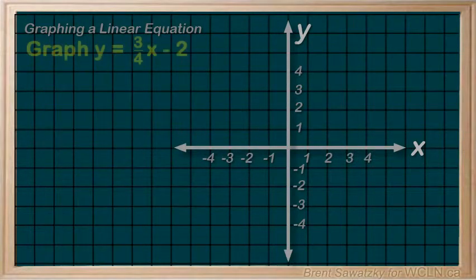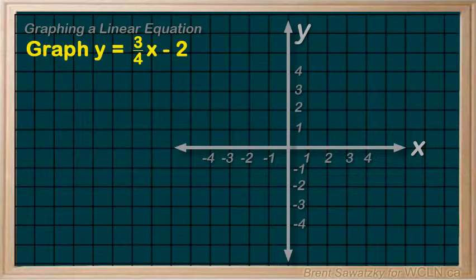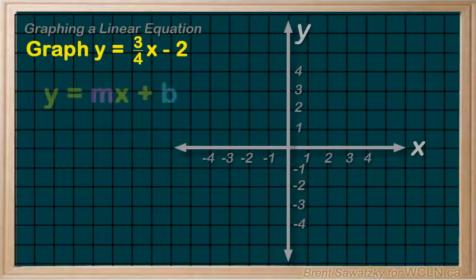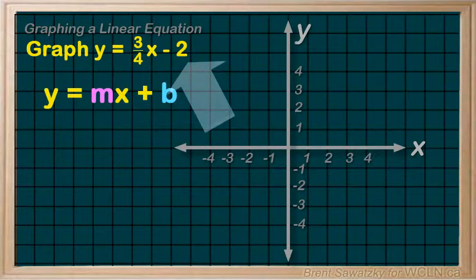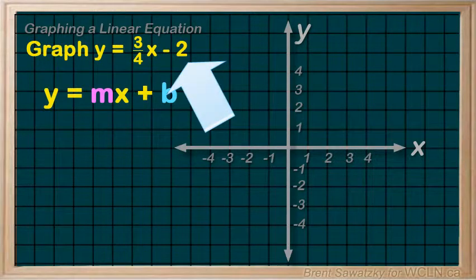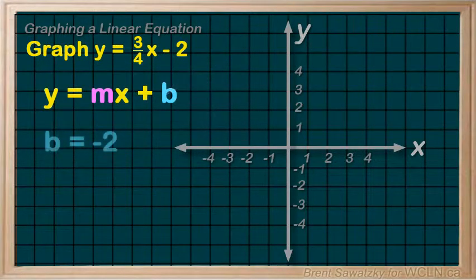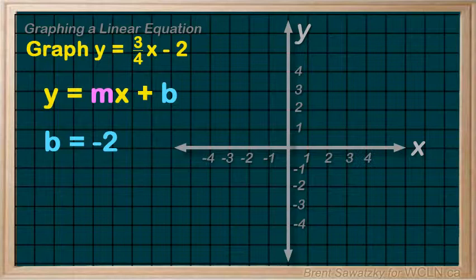Let's try another: graph y equals three over four x minus two. We think y equals mx plus b, and right away we can identify the y-intercept or b as negative two and plot it right here.